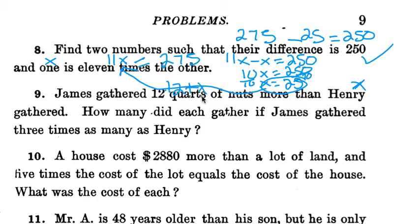How many did they each gather if James gathered three times as many as Henry? So I do 3x minus x gives us 12, because if we have James here who had three times as many, you take away the amount that Henry got, and we're left with 12, that's our difference. 3x minus x is 2x. 12 divided by 2, x equals 6. So that is Henry.